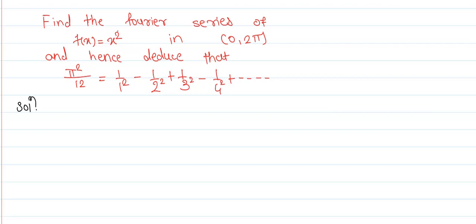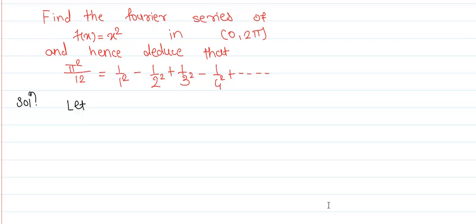The question is to find the Fourier series of f(x) = x² on [0, 2π], and further deduce that π²/12 equals 1/1² − 1/2² + 1/3² − 1/4² up to infinity. Let f(x) = x².